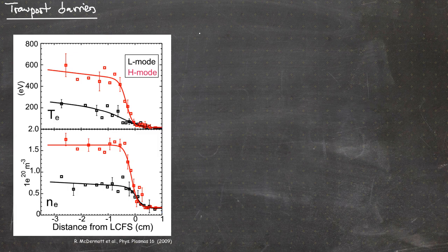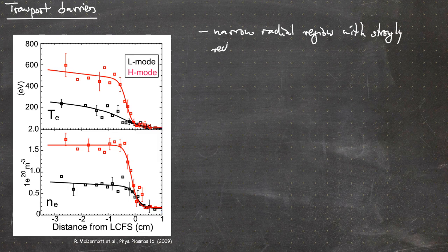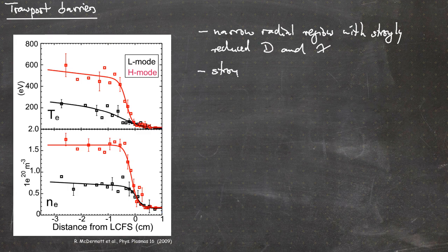What are transport barriers? Transport barriers are basically narrow radial regions with a strongly reduced diffusion coefficient D and also with a strongly reduced thermal diffusivity χ. Both the particle diffusivity and the thermal diffusivity are strongly reduced because the turbulent transport is actually reduced — so it is a strongly reduced turbulent transport.